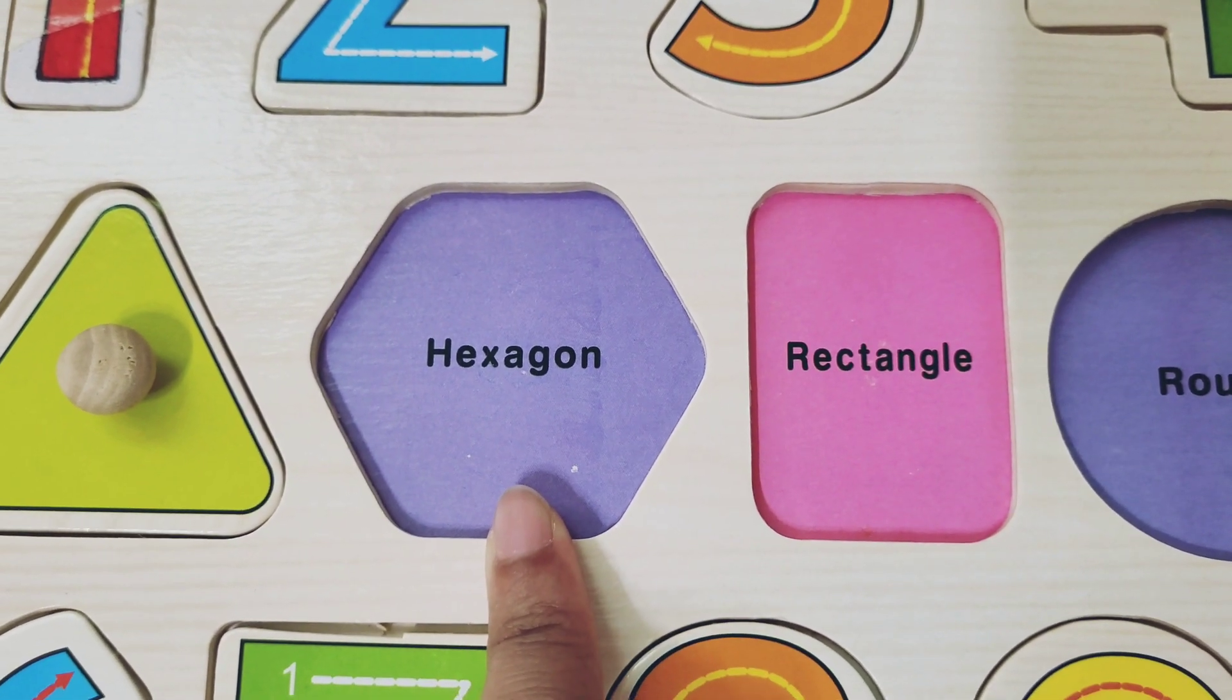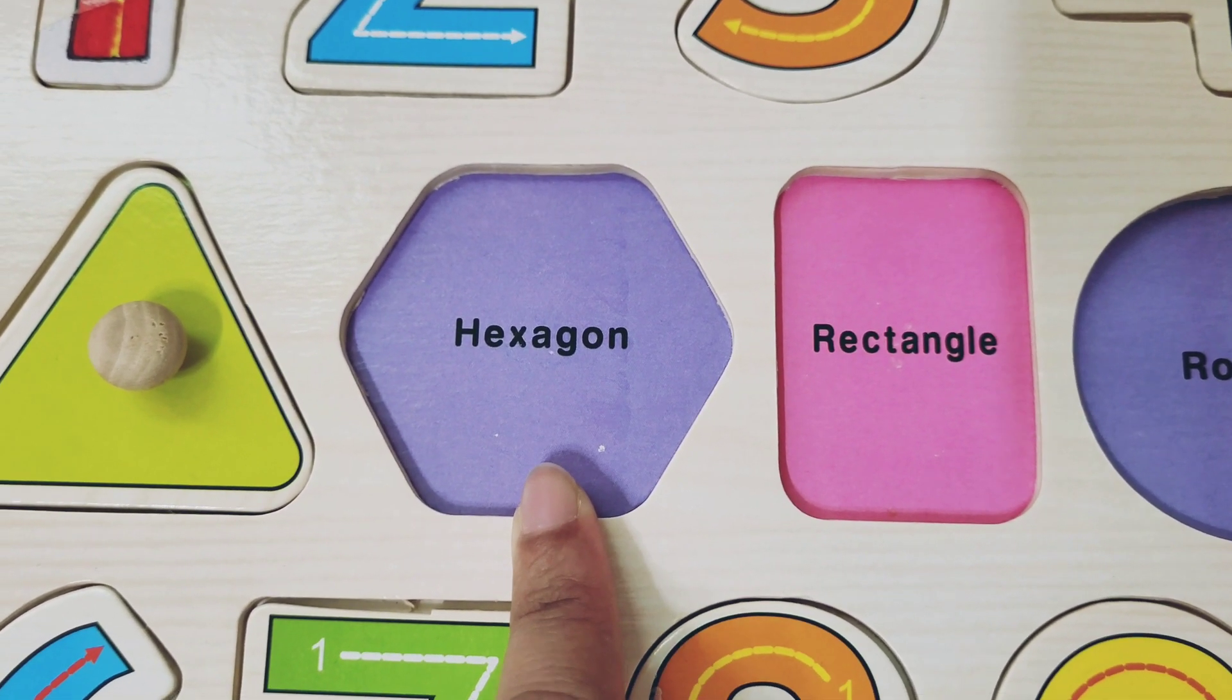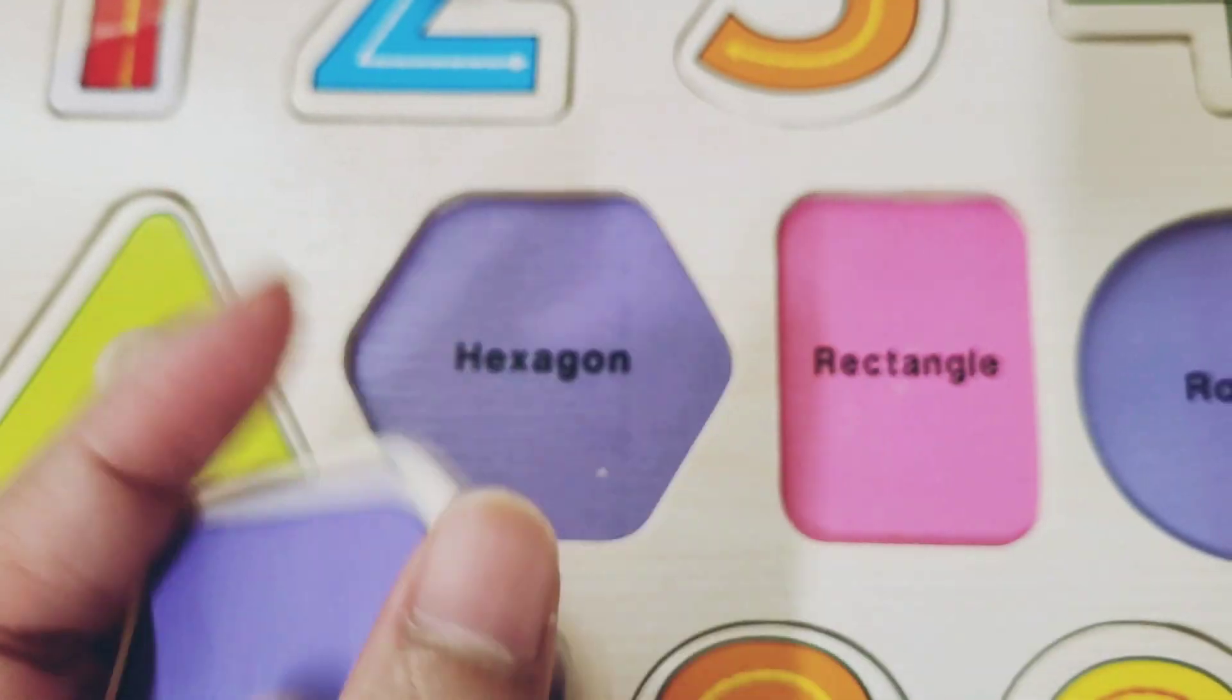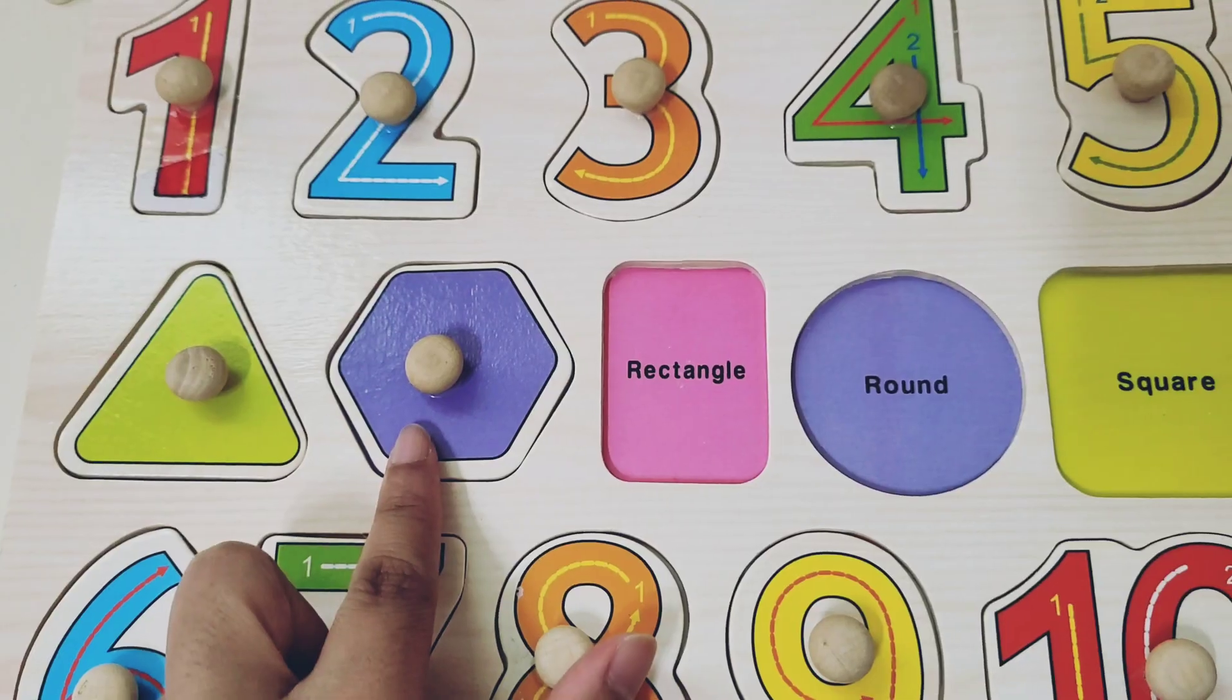And which shape is this? Hexagon! It has six sides. And this color is purple.